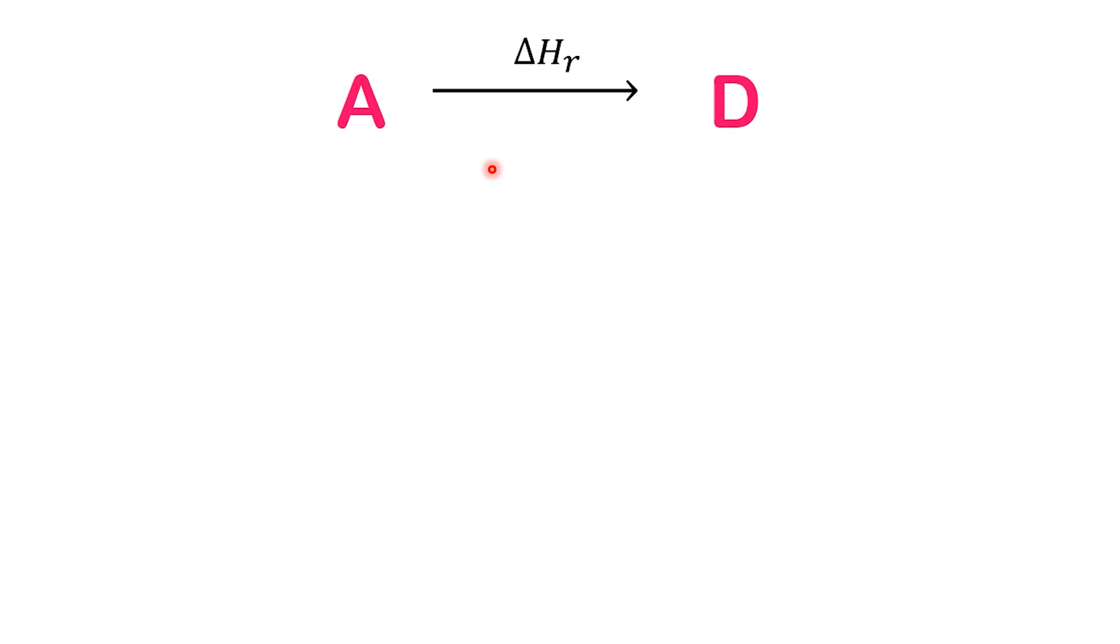Let's look at a simple illustration. Suppose substance A changes directly into product D, and we want to know the enthalpy change for this reaction. We may not know this value directly, but imagine another path where A transforms into B, B transforms into C, and finally C transforms into D.